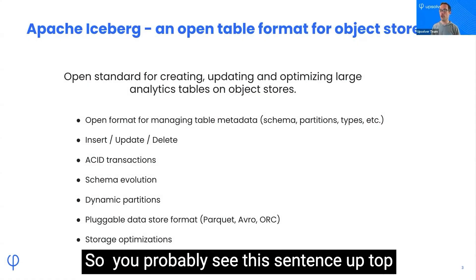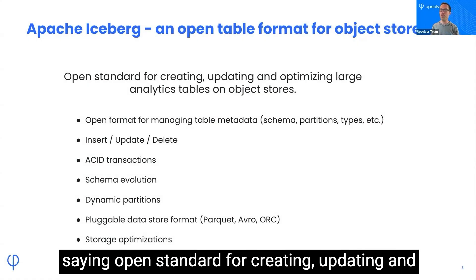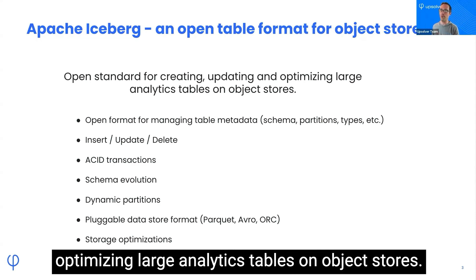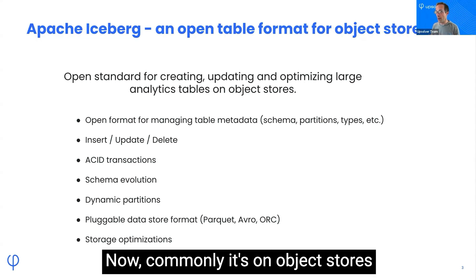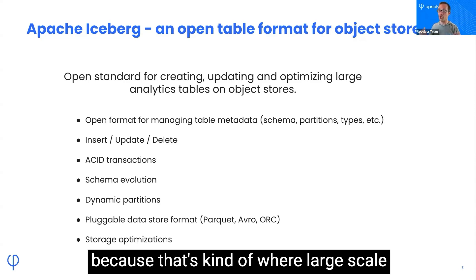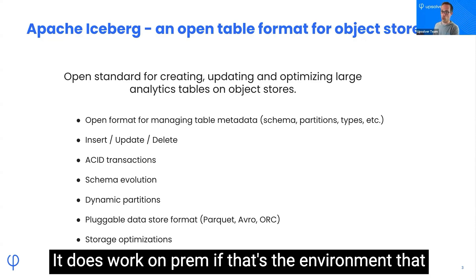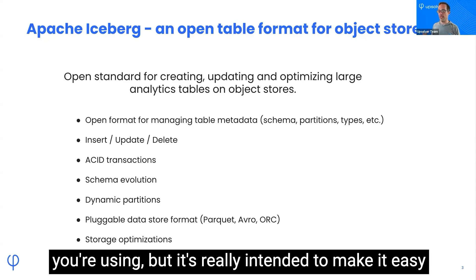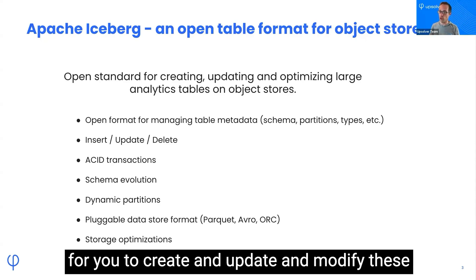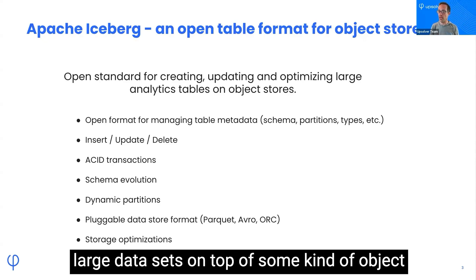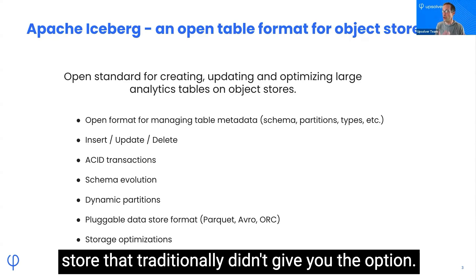What is Apache Iceberg? It's an open standard for creating, updating, and optimizing large analytics tables on object stores. Commonly it's on object stores because that's where large-scale analytics is, but it does run on HDFS and works on-prem as well. It's really intended to make it easy to create, update, and modify large datasets on top of an object store that traditionally didn't give you the option to update.